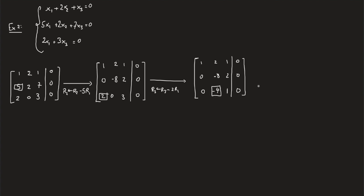Last but not least, we null out the -4 by replacing r3 with r3 minus half r2. The first and second rows remain the same. The third row becomes 0 minus half 0 is 0, -4 minus half -8 is also 0, 1 minus half times 2 is 0, and 0 minus half 0 is 0. We got a row that is all 0.